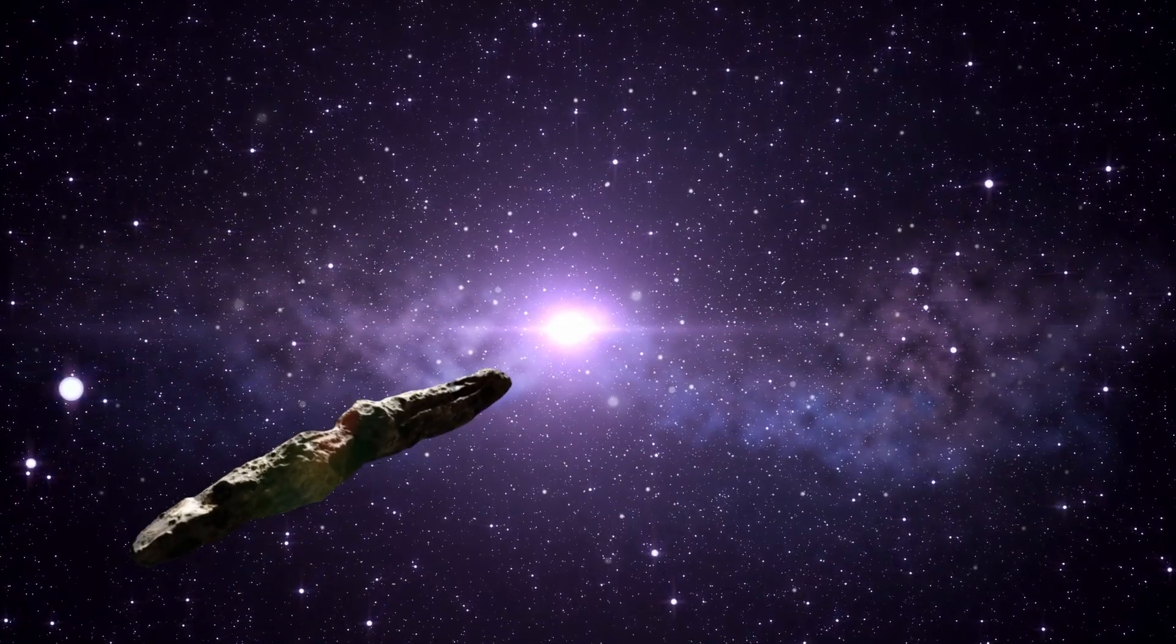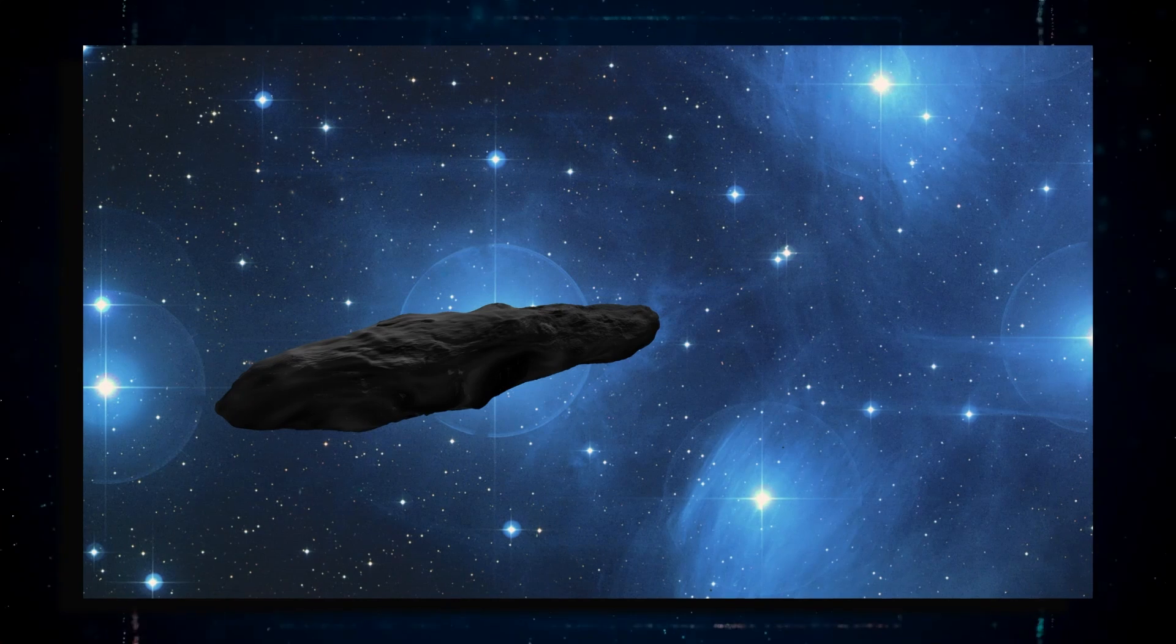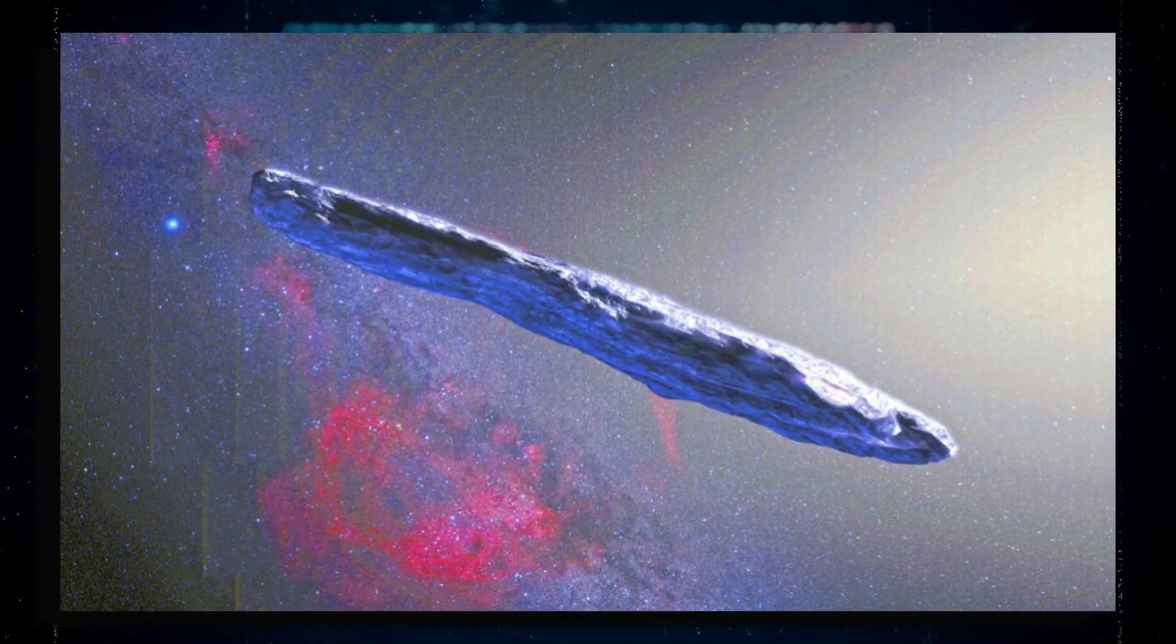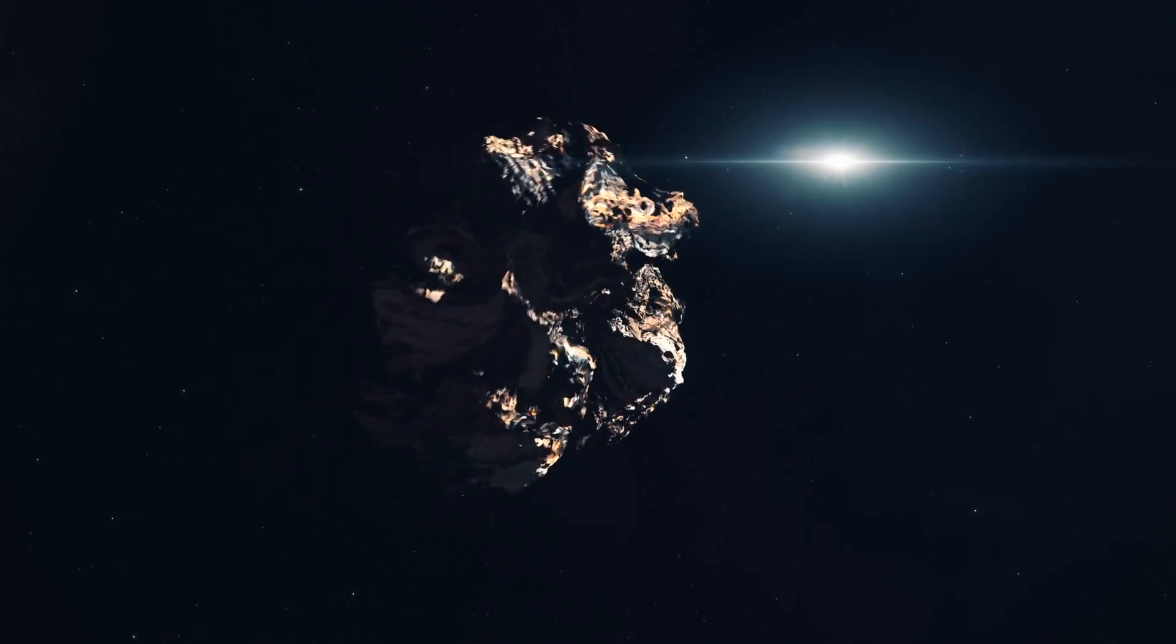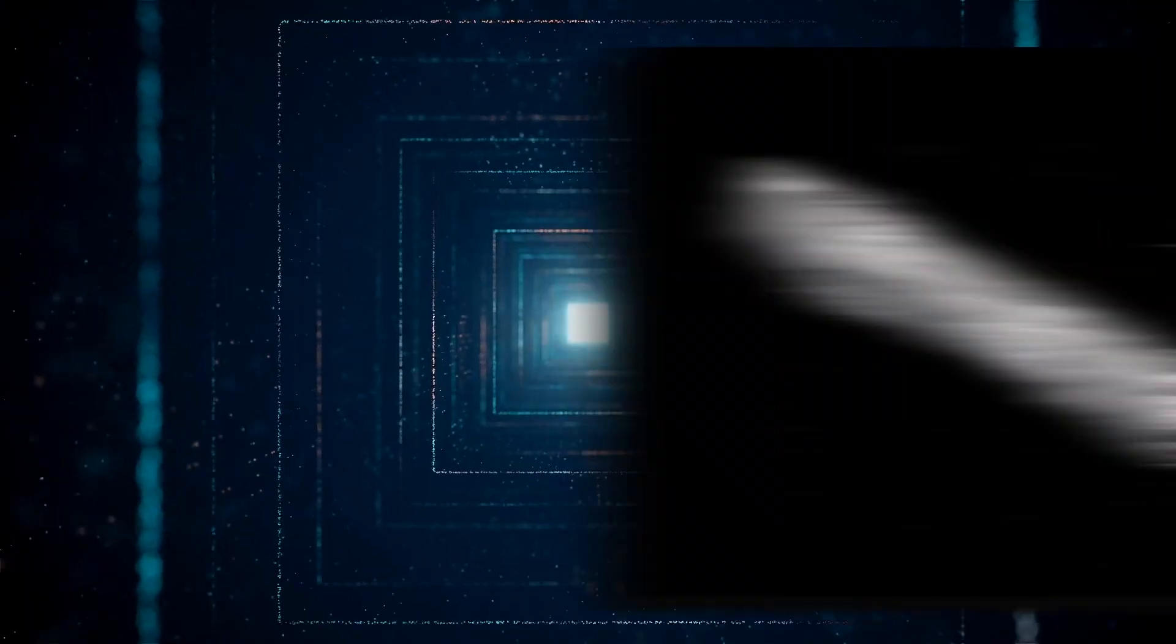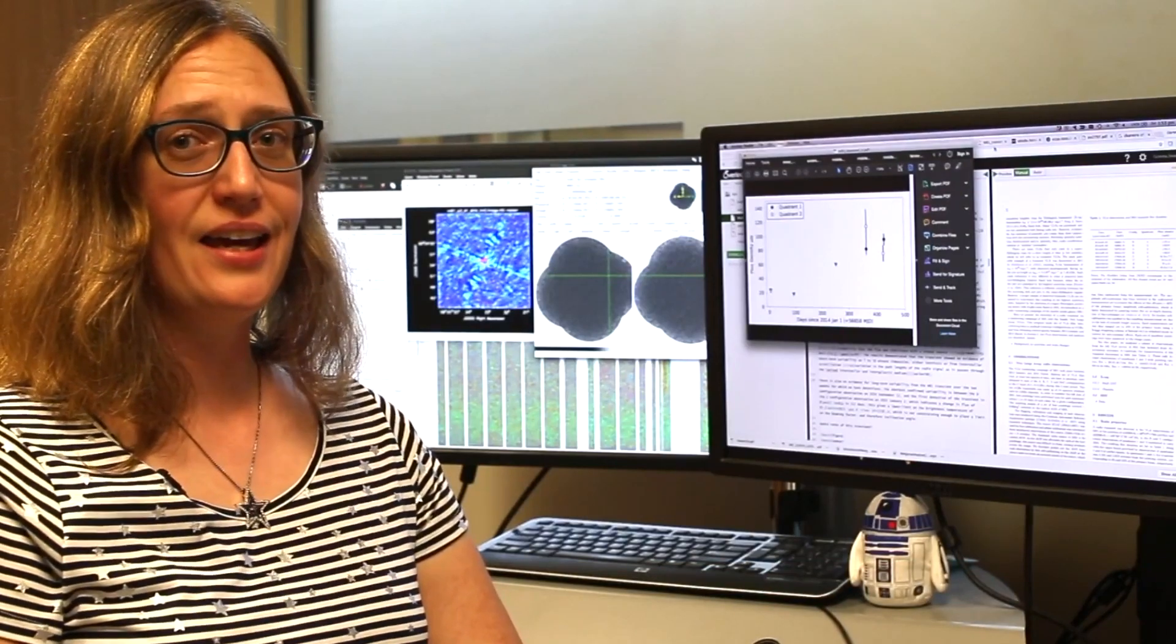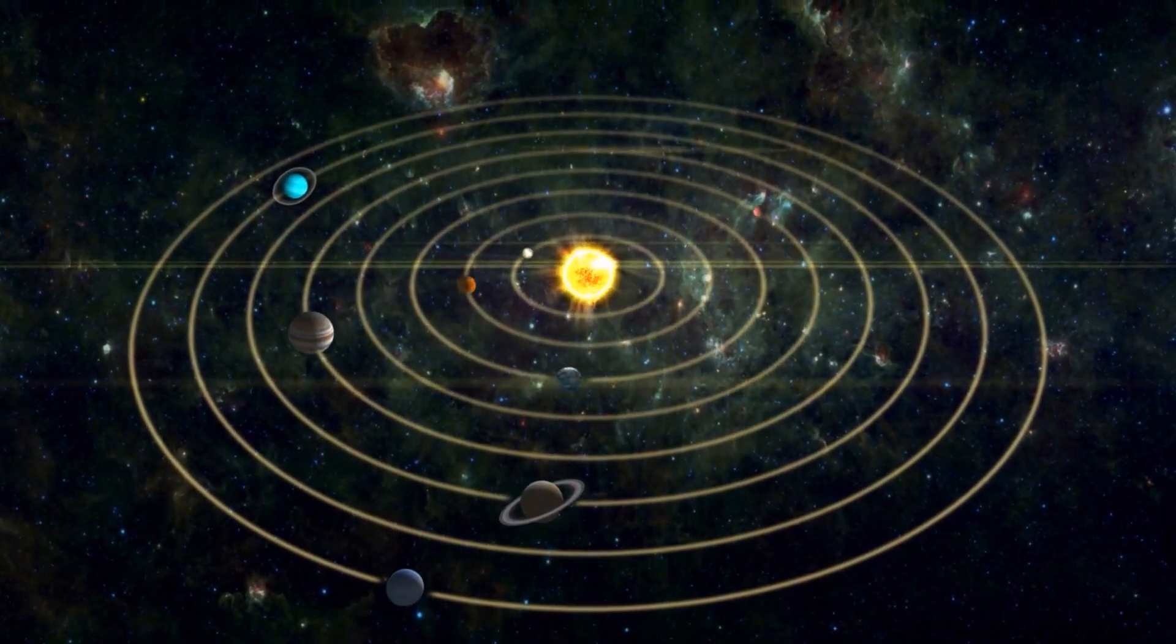While natural explanations attempt to unravel the peculiarities of Oumuamua, they also usher in a cascade of fresh inquiries. Why did Oumuamua not exhibit the typical characteristics of a comet? What could possibly account for its remarkably elongated shape, a departure from anything previously observed? It's at this juncture that speculation ventures into the realm of the extraordinary. The behavior and features displayed by Oumuamua have led some individuals to entertain the intriguing notion that it might transcend being merely an unusual space rock on a cosmic voyage. Could it be an artificially crafted object?